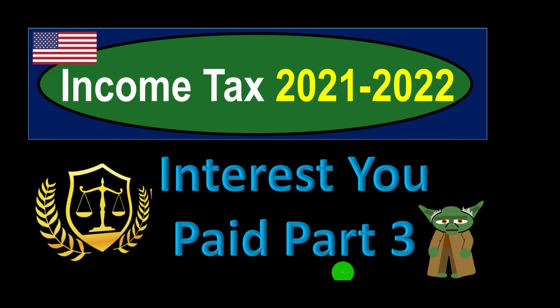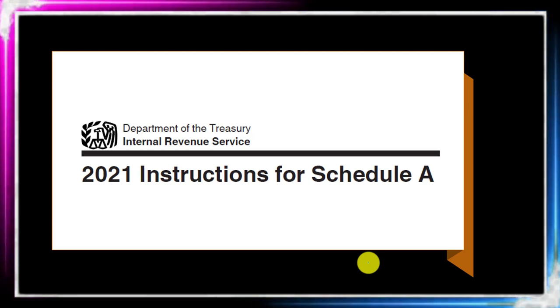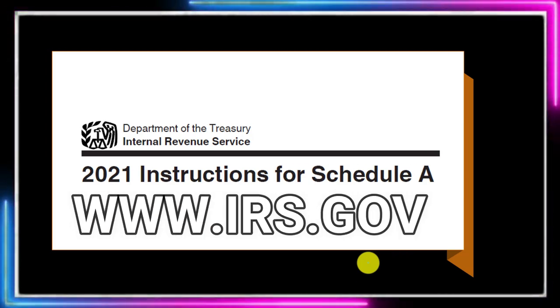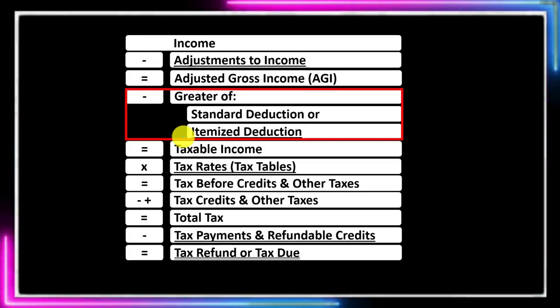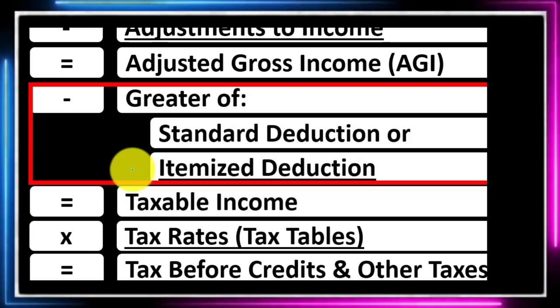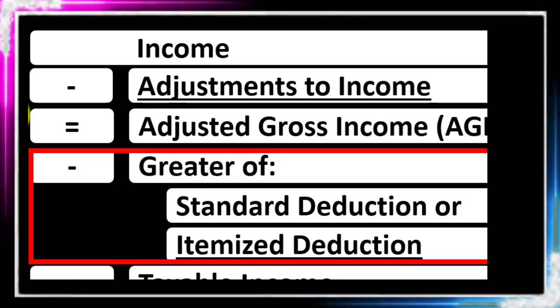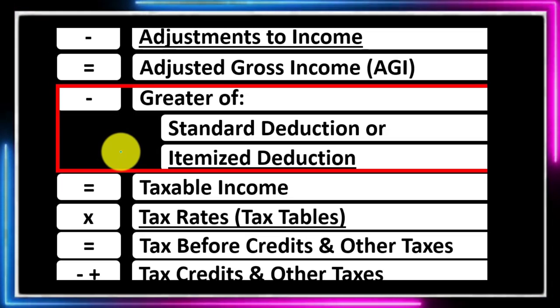Income tax 2021-2022, interest you paid, part number three — get ready to get refunds to the max. We're diving into income tax 2021-2022. Most of this information can be found on the Schedule A instructions, tax year 2021, on the IRS website, irs.gov. We're focusing in on the itemized deductions in the income tax formula, keeping that distinct from the above-the-line deductions or adjustments to income — the Schedule 1 deductions.